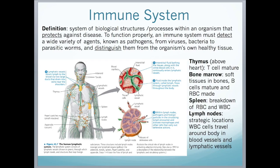The immune system is a system of biological structures and processes within an organism that protects against disease. To function properly, the immune system must first detect a wide variety of agents, which we refer to as pathogens — which includes viruses, bacteria, and parasitic worms — and then distinguish them from the organism's own healthy tissue.